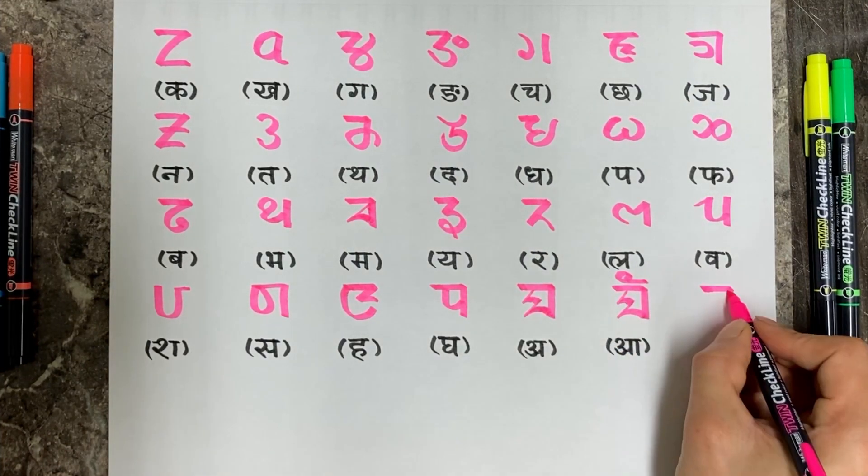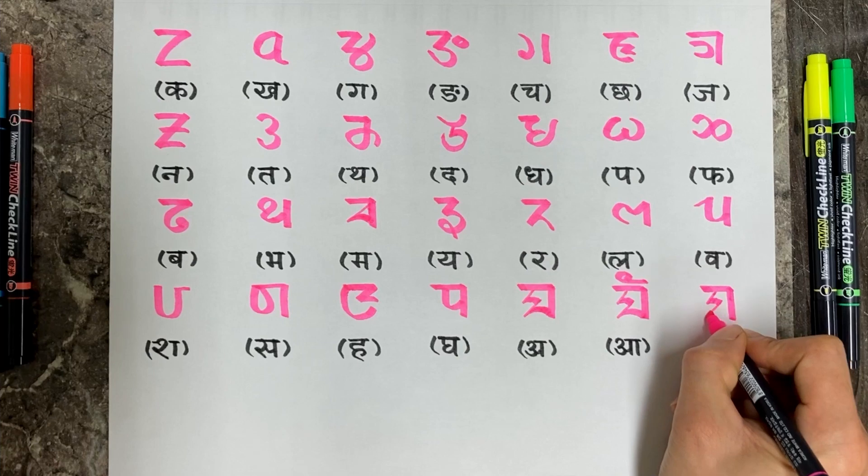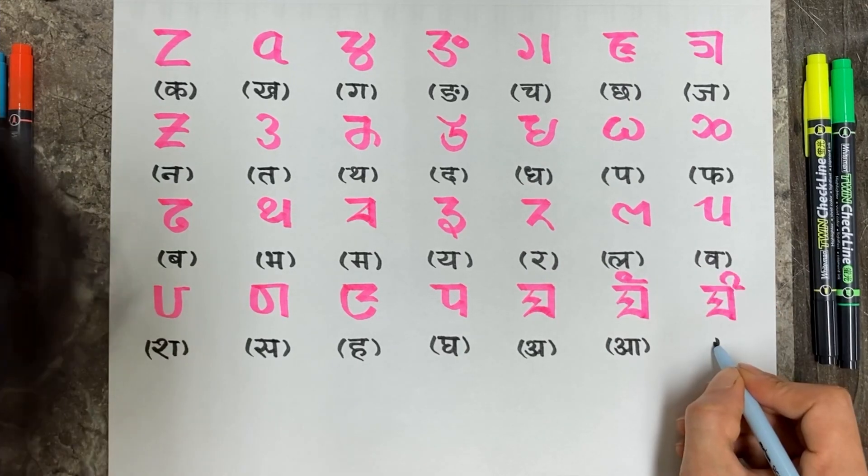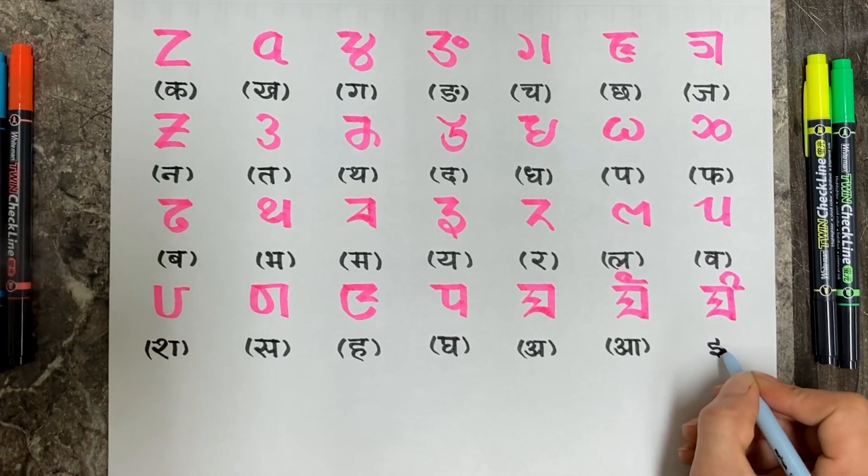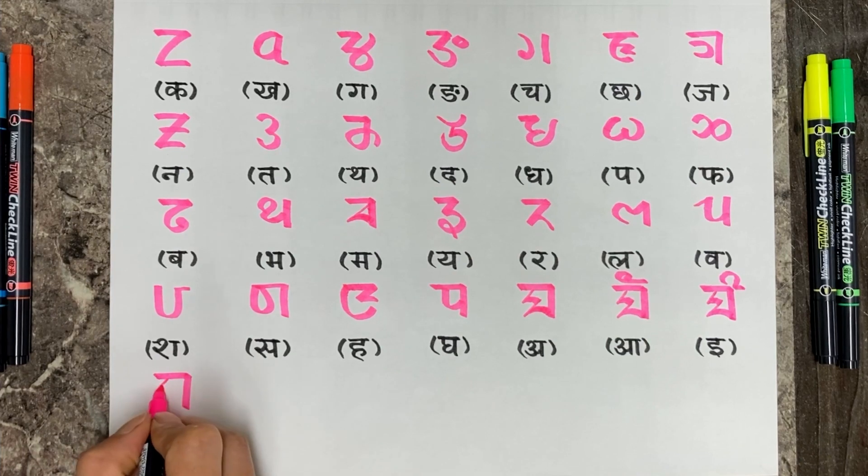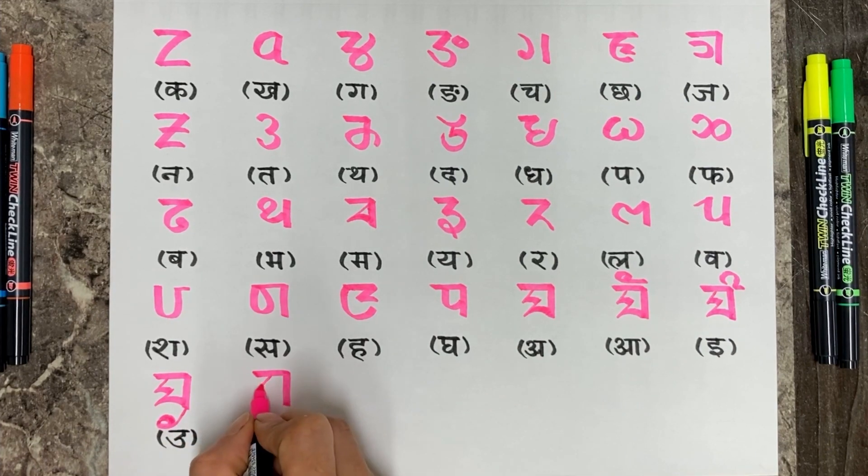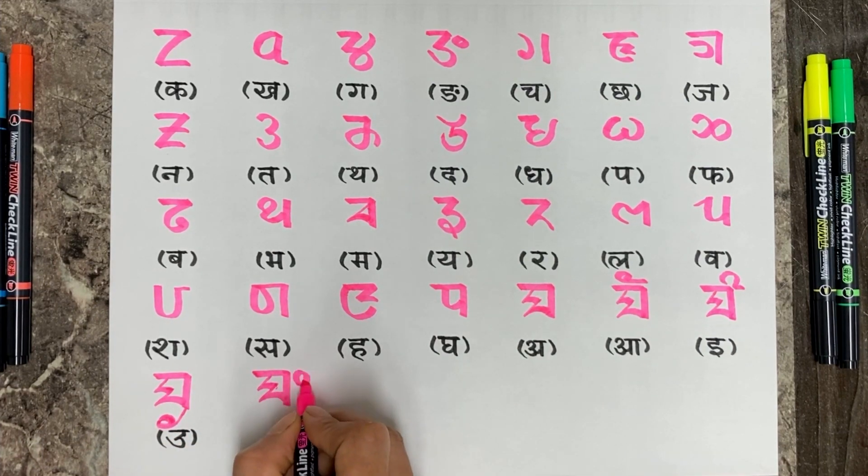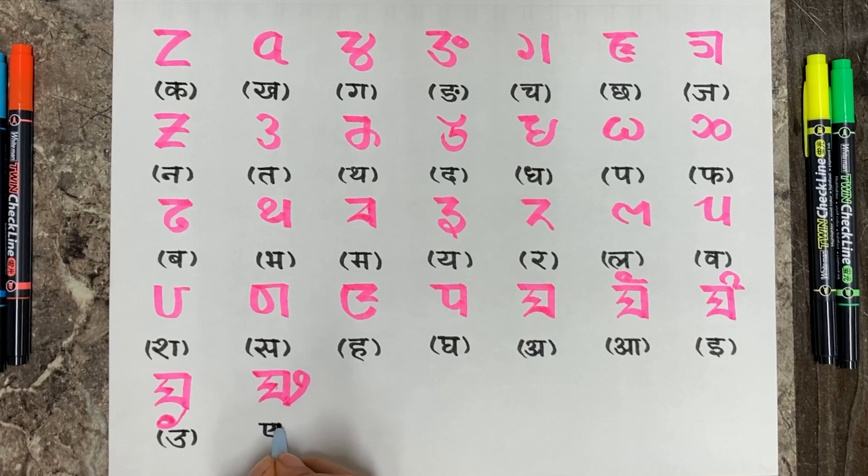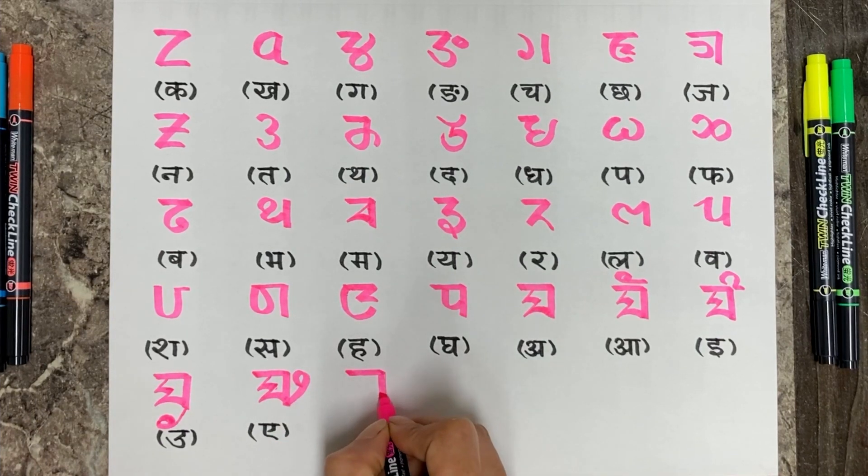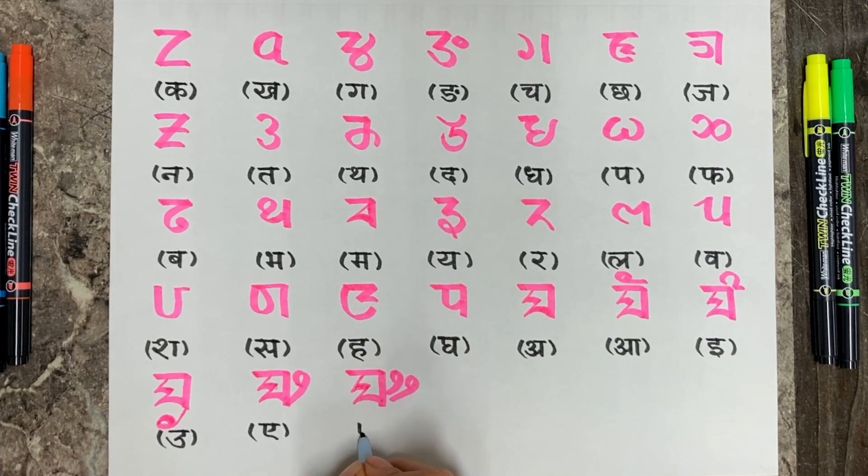સમેય કેનાતી સમુદાયમાં બીશેજ કરી રાઈર લીબુ જાતિમા કેના આસા કવી તાબે જારુ સીર જાંગા લીપીમાં લીપિમાં લીપિમાં દભહે કોપઈ